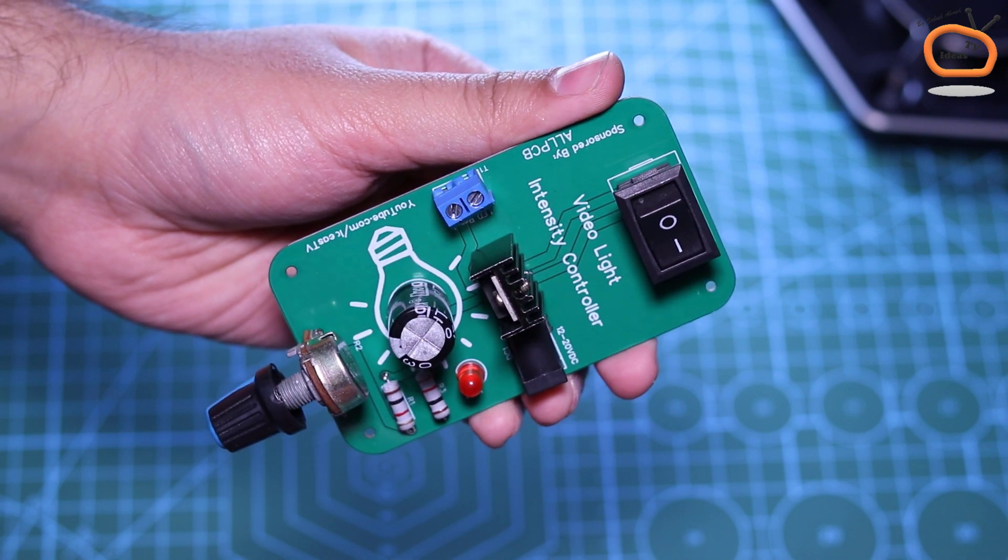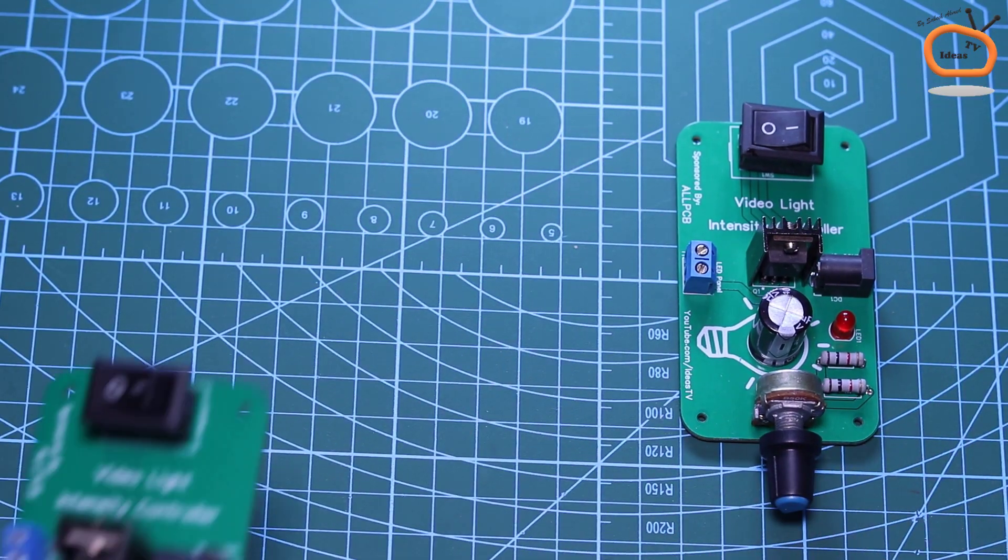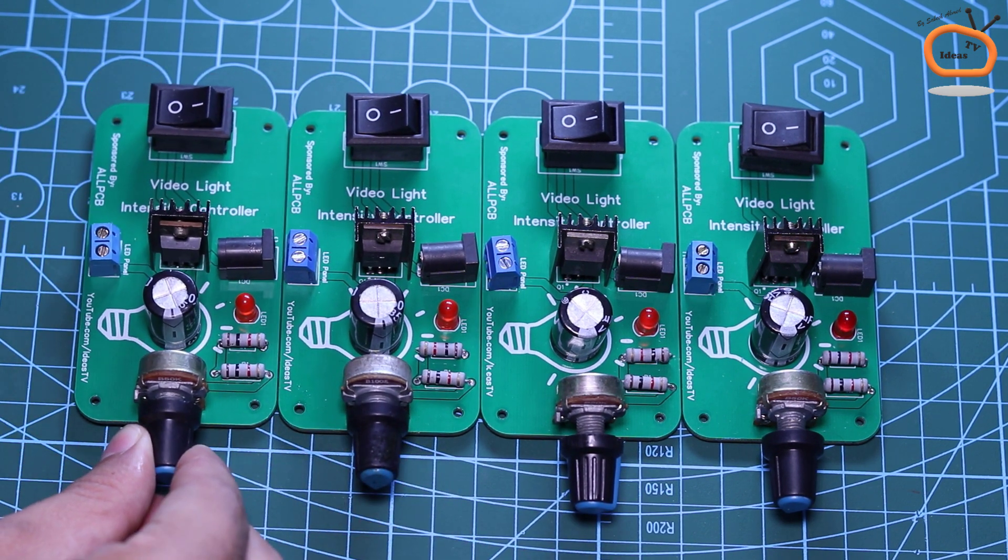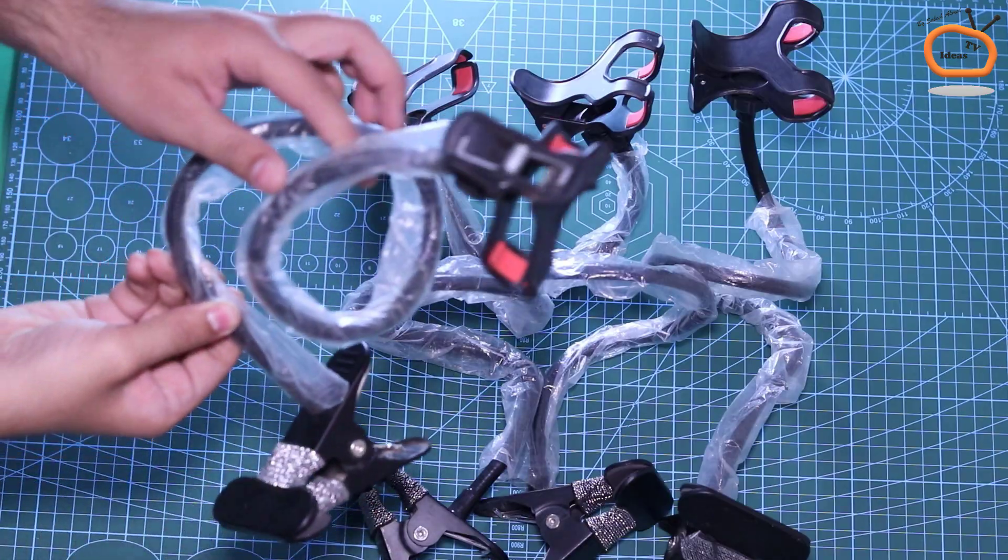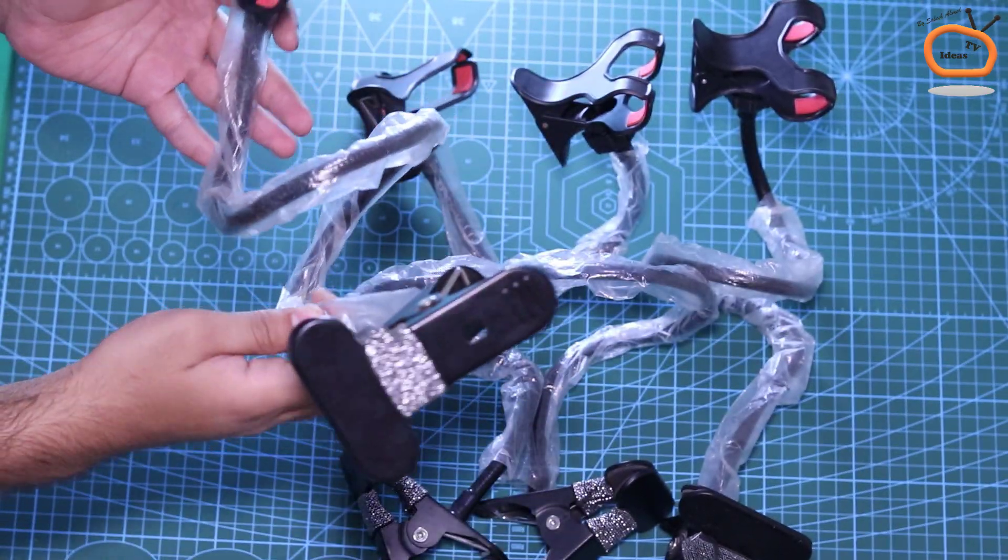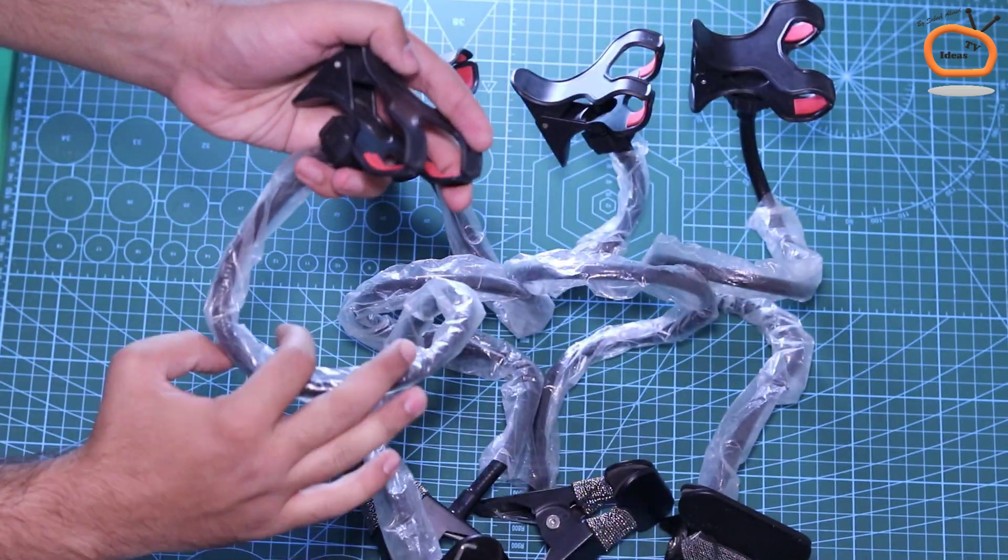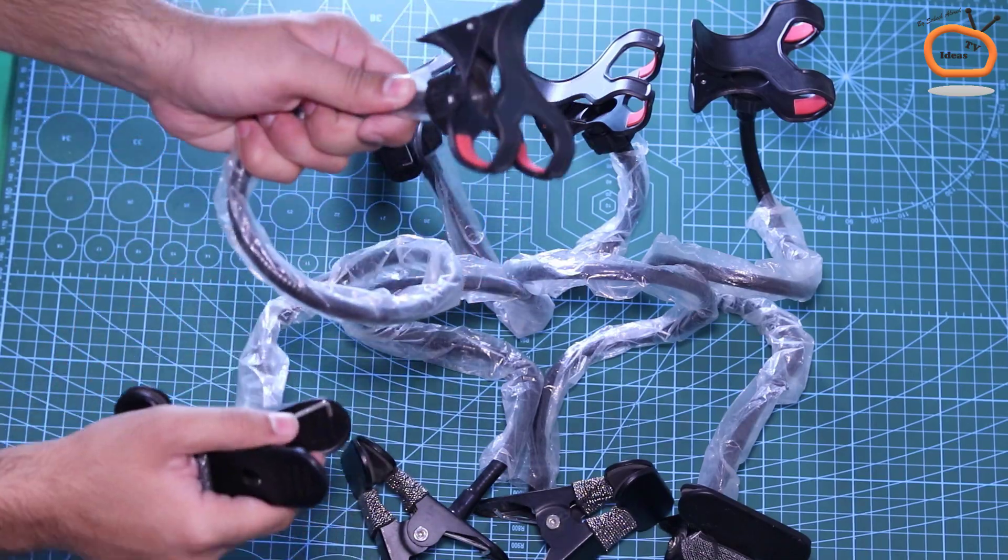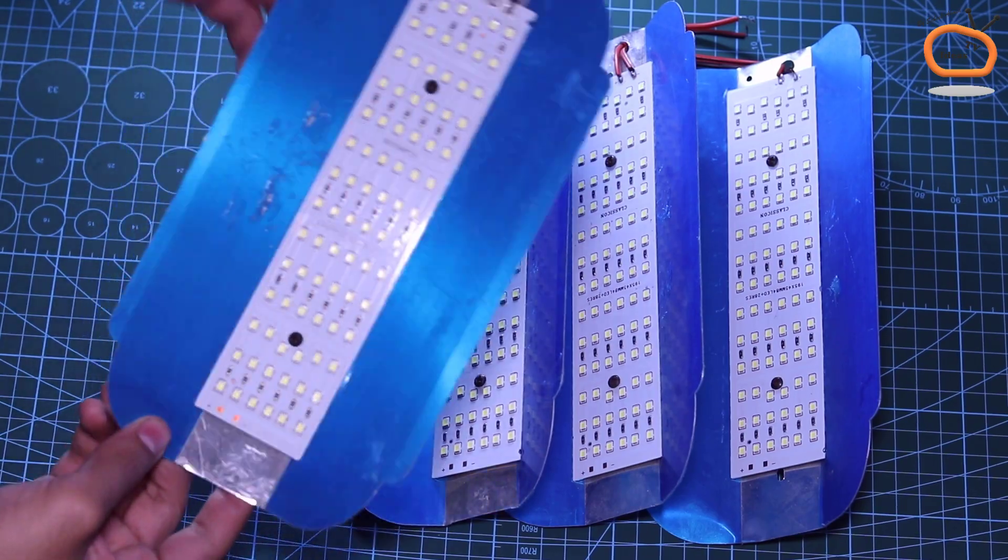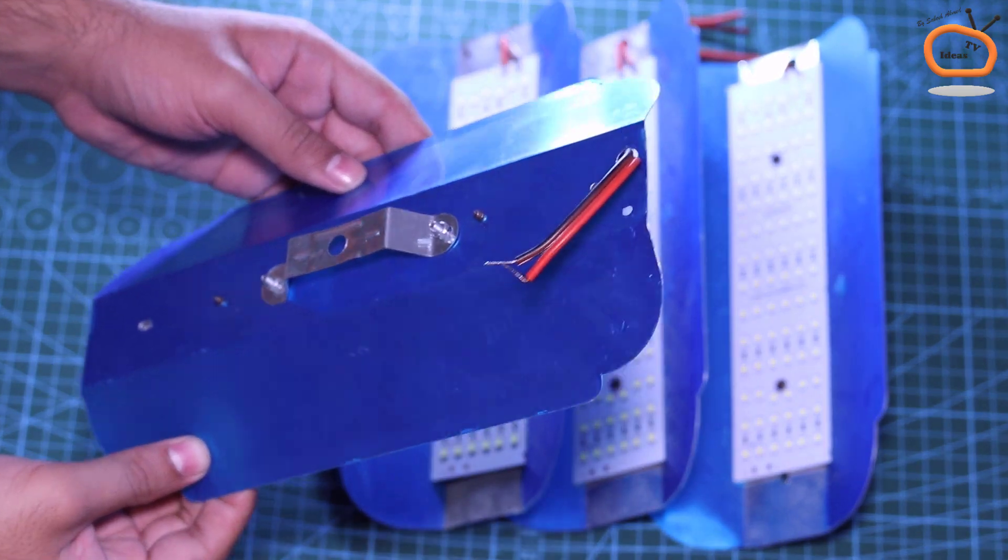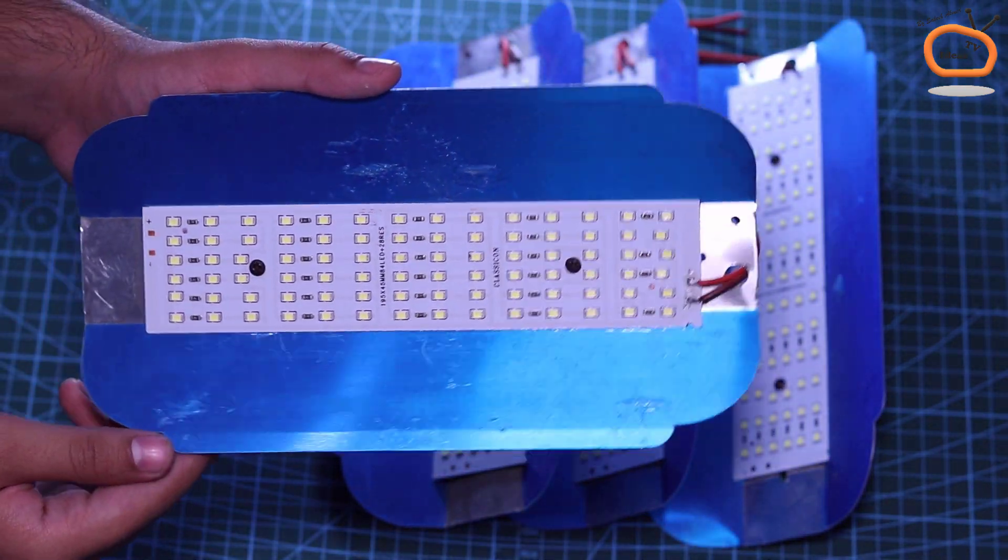For four separately controlled video lights, we need to prepare four controller boards like this, four flexible snake mobile holders or tripods, and obviously four 50W LED light panels with refractor shade. You can find the link of all the materials in the video description.